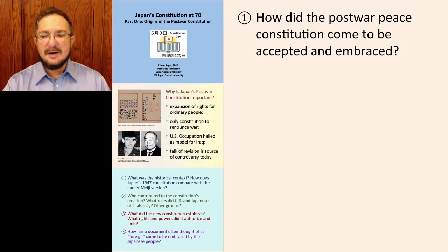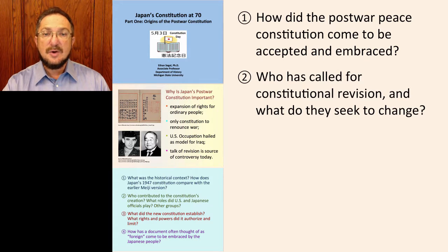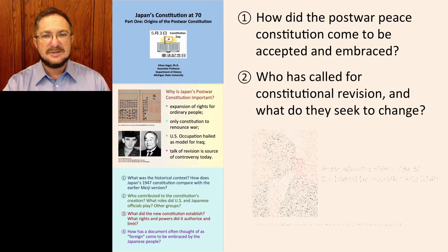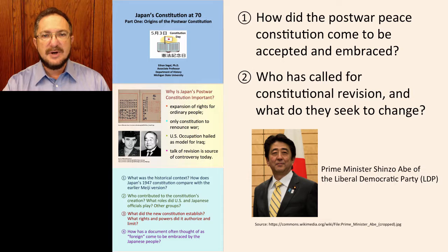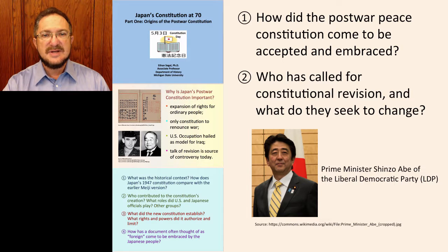In this video, we'll look at how the post-war constitution came to be accepted and embraced by many in the Japanese public, as well as calls by some politicians to amend the Constitution or to rewrite it entirely. Talk of constitutional revision has been in the news a lot in recent years, especially since the current Prime Minister, Shinzo Abe, and his ruling political party, the LDP, or Liberal Democratic Party, are eager to bring about constitutional reform, and since they won a major victory in elections in the upper house earlier this year in 2016. So we'll look at the history of the Constitution over the 70 years since it came into effect, but focus in particular on what these LDP reformers hope to accomplish and why.